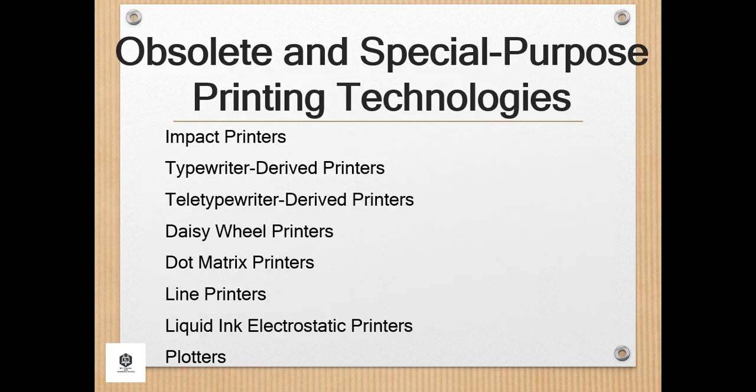Now, the obsolete and special purpose printing technologies. The following technologies are either obsolete or limited to special applications, though most were at one time in widespread use: impact printers, typewriter-derived printers, teletypewriter-derived printers, daisy wheel printers, dot matrix printers, line printers, liquid ink electrostatic printers, and plotters.